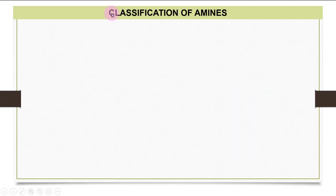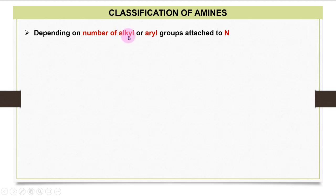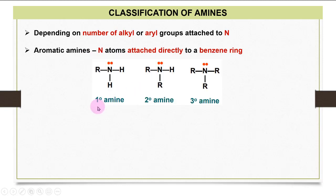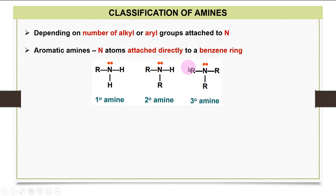Let's look at the classification of amines. It depends on the number of alkyl or aryl groups attached to the nitrogen atom. If it is an aromatic amine, the nitrogen atom is attached directly to a benzene ring. A primary amine has one alkyl group attached to nitrogen, a secondary amine has two, and a tertiary amine has three. These alkyl groups can be the same or different.